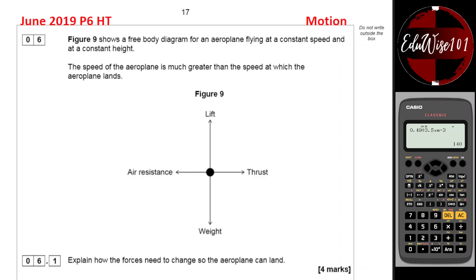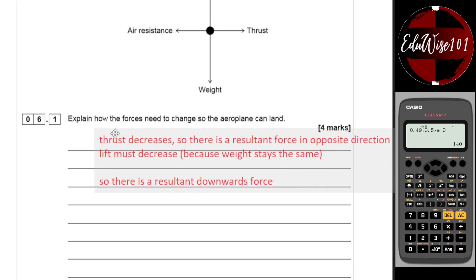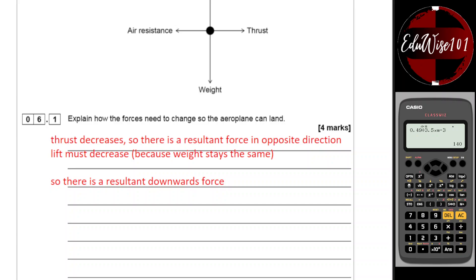And in order to reduce the speed, you need to reduce the thrust, which will actually increase the air resistance as well. So the thrust decreases, so there's a resultant force in the opposite direction.